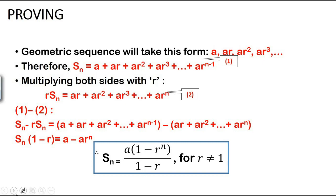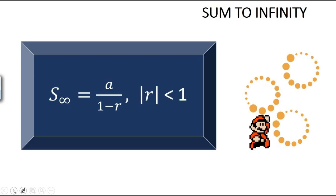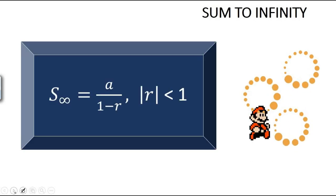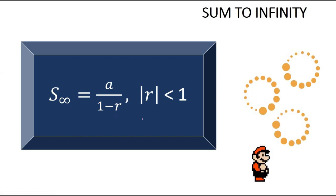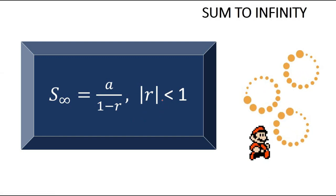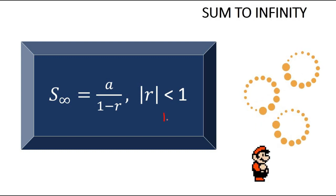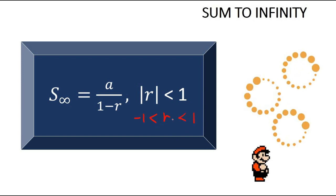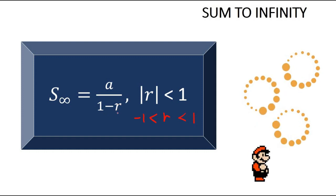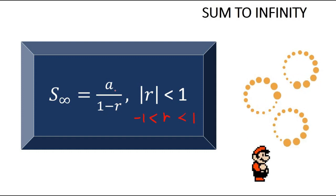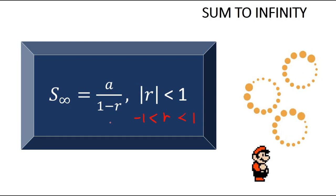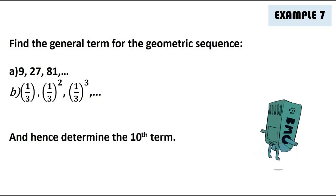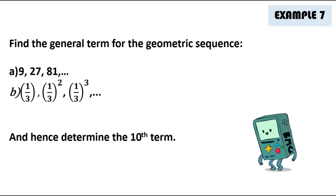The other summation formula is proved by subtracting in the opposite order. For the sum to infinity, it only applies when the modulus of r is less than one, meaning r is strictly between negative one and one. If r equals one the denominator becomes zero, so there is no solution.